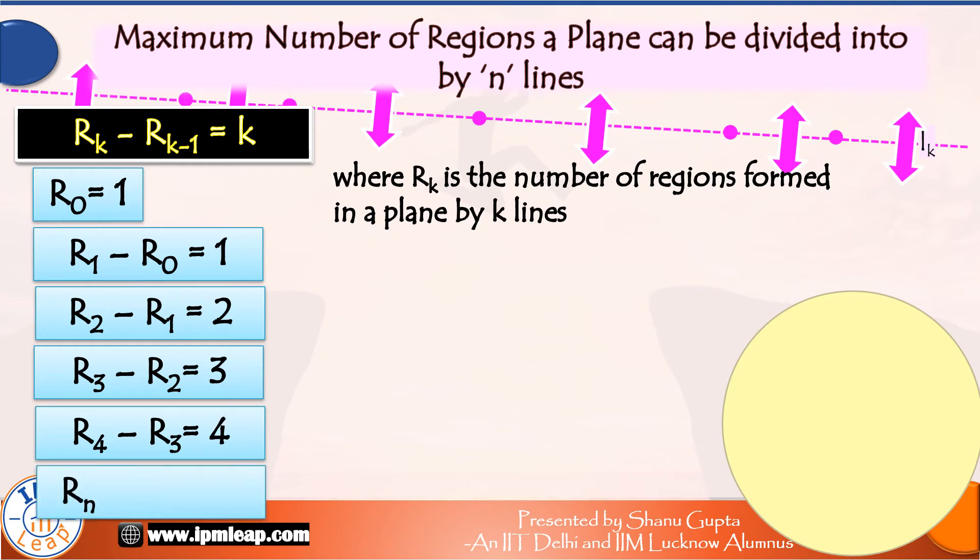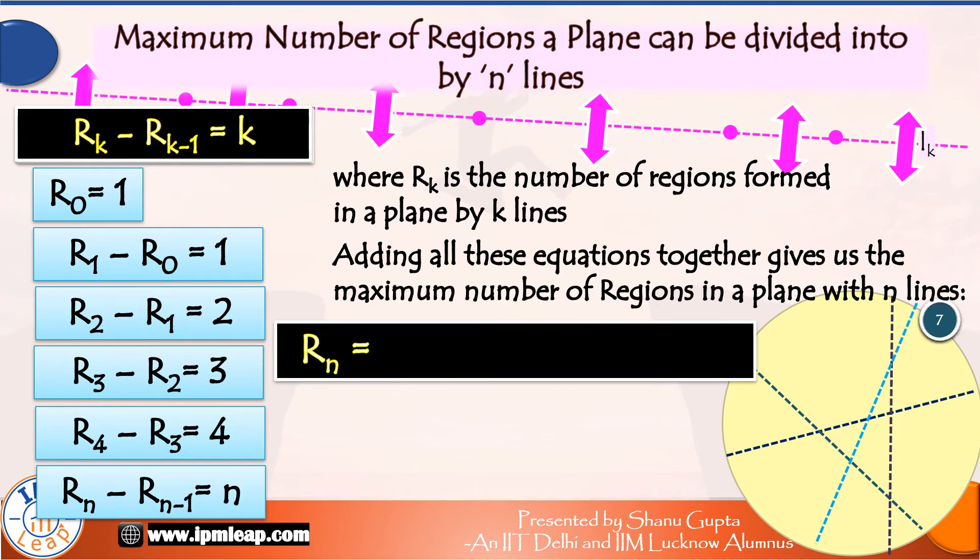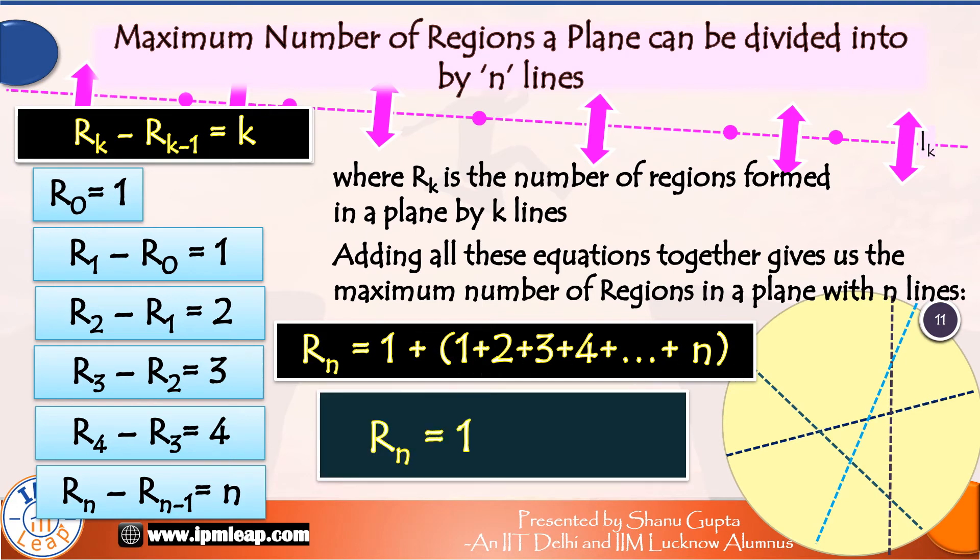Rn minus Rn-1 is equal to n because the nth line increases n regions on our plane. Adding all these equations together gives us the maximum number of regions in a plane with n lines. We can see alternate terms cancelling out. So, Rn is equal to 1 plus bracketed 1 plus 2 plus 3 up to n. And the sum of first n natural numbers is n into n+1 divided by 2.